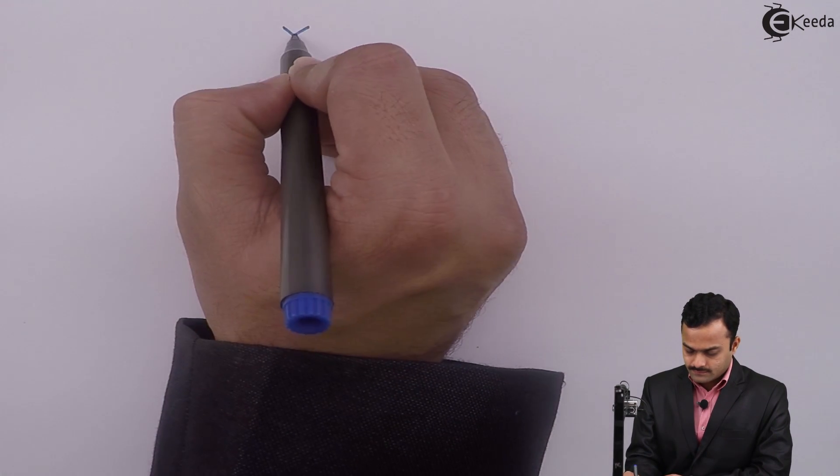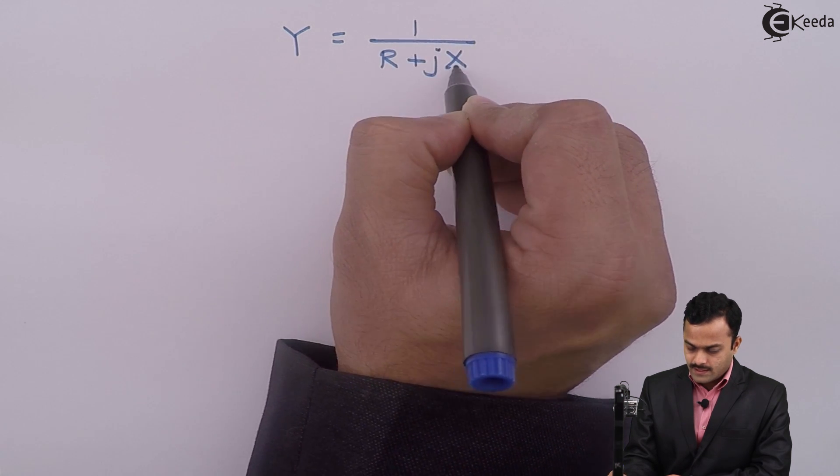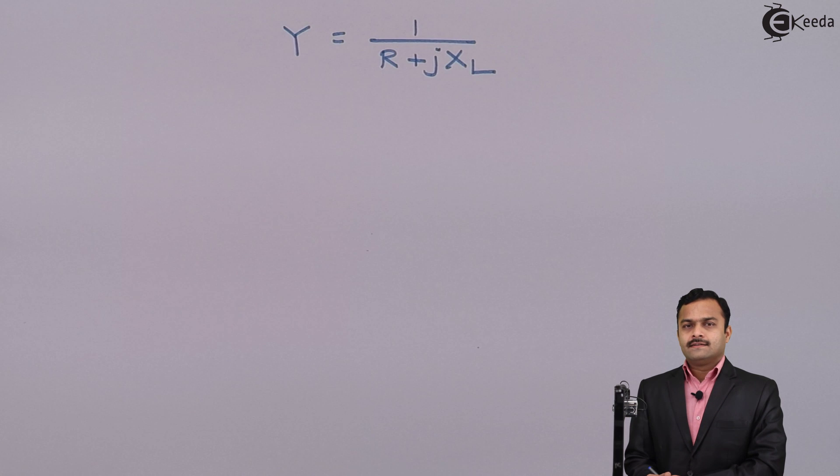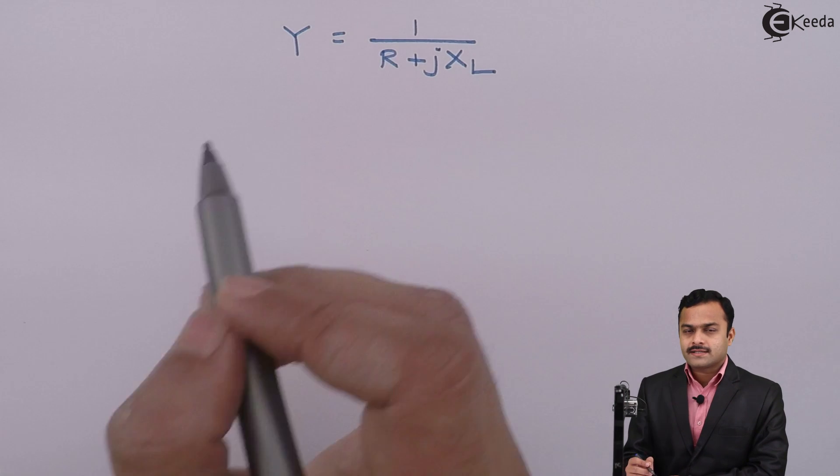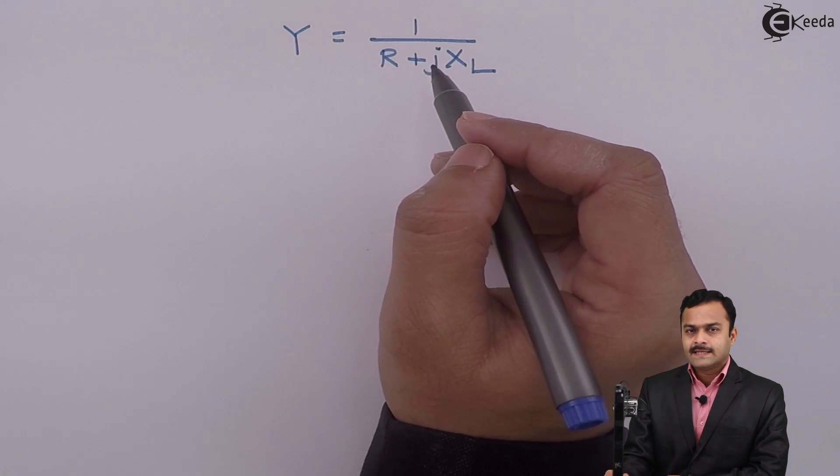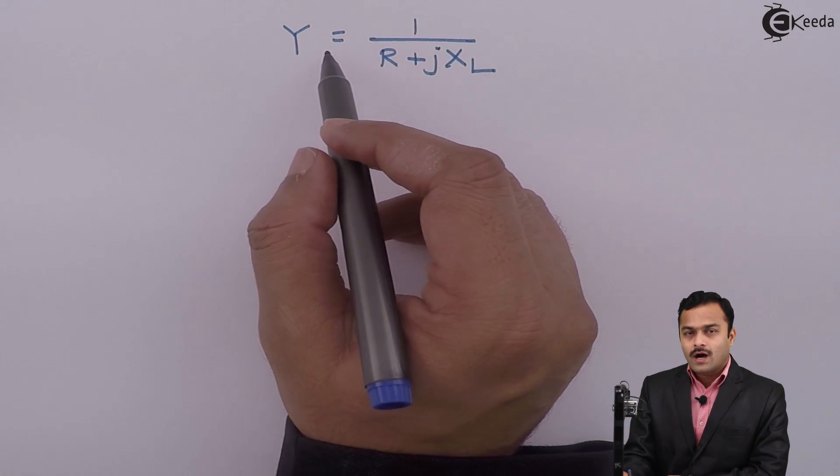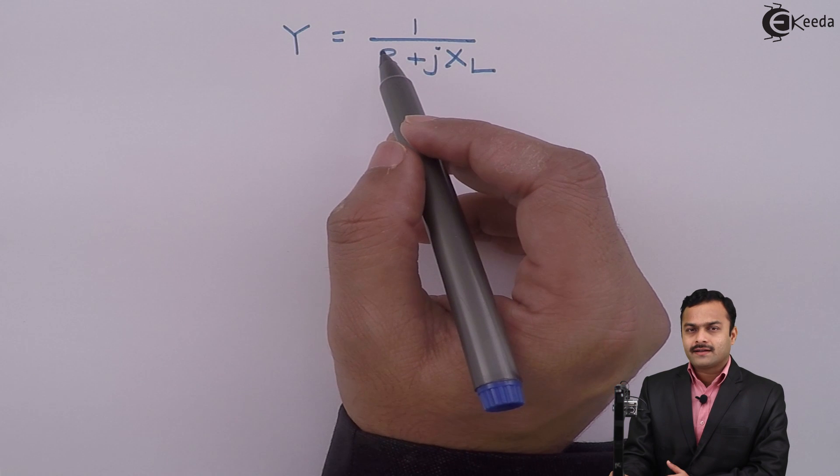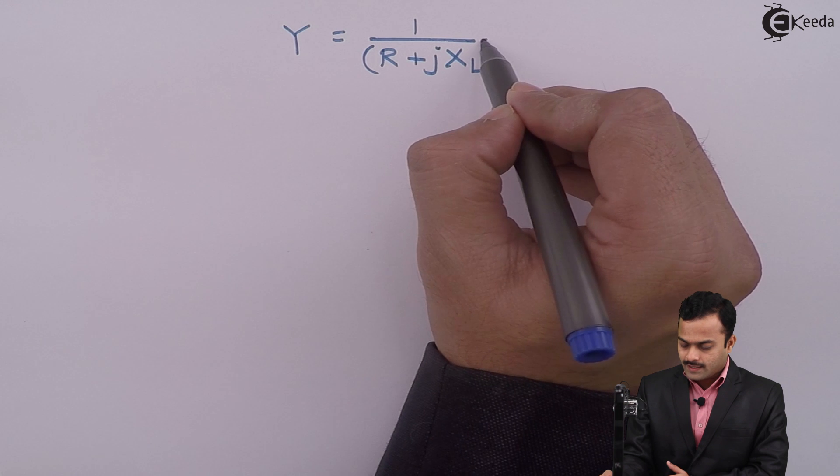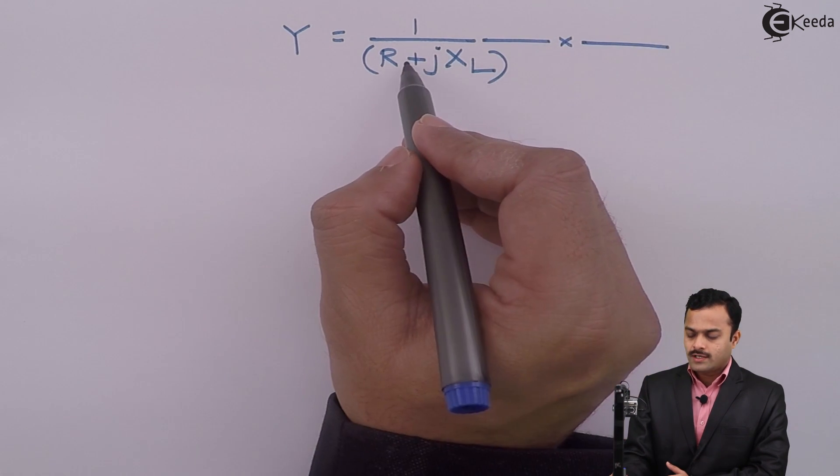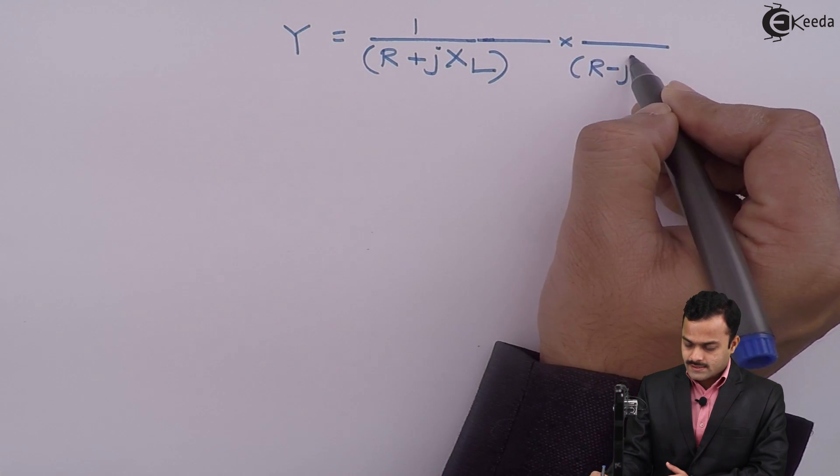If I substitute Z, I will get Y as 1/(R + jXL), where XL is inductive reactance. Since Z is a complex quantity, obviously its reciprocal is also a complex quantity. So let's represent Y in terms of proper real and imaginary terms. For that purpose, let's multiply by the complex conjugate of the denominator, and that is R - jXL.